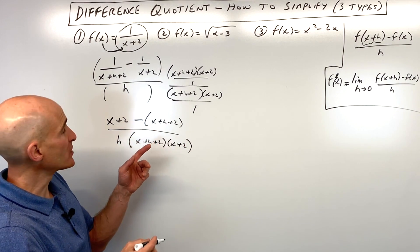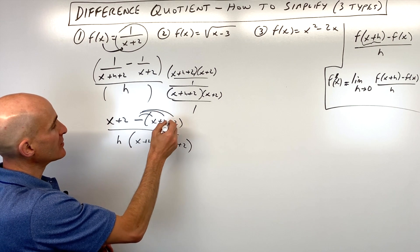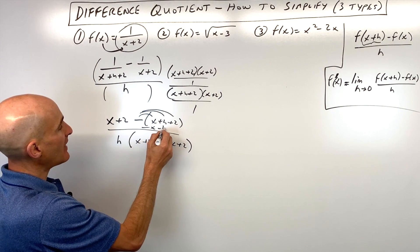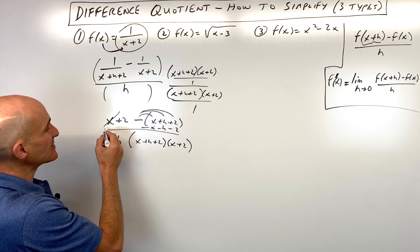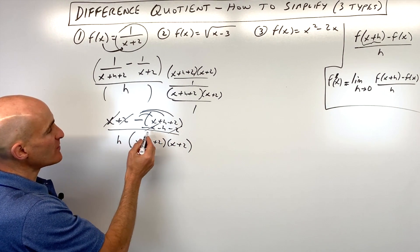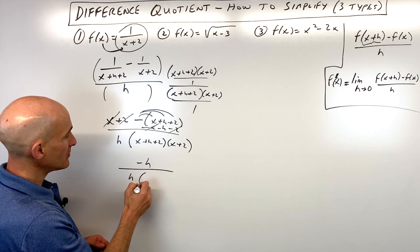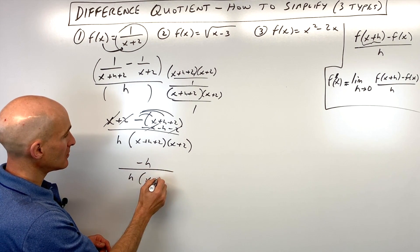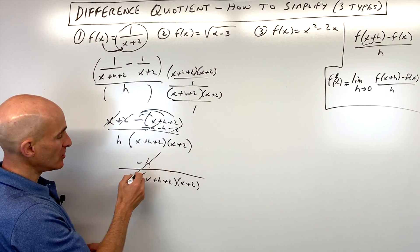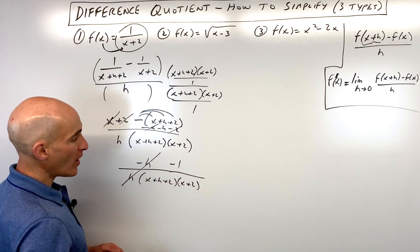Now we simplify — distribute the negative into the parentheses, giving us negative x minus h minus two. The x's cancel, the 2's cancel, and we're left with negative h in the numerator. The h's cancel, and we're left with negative one in the numerator.